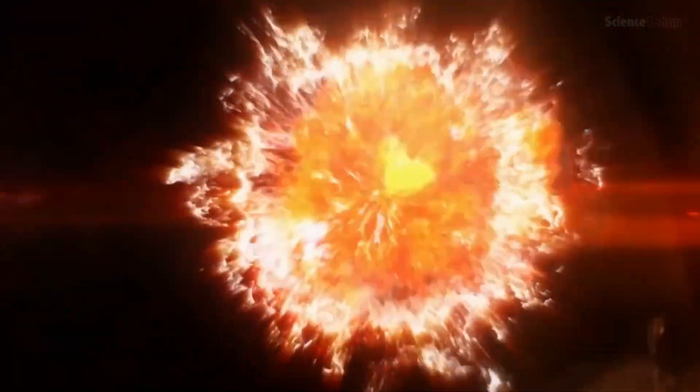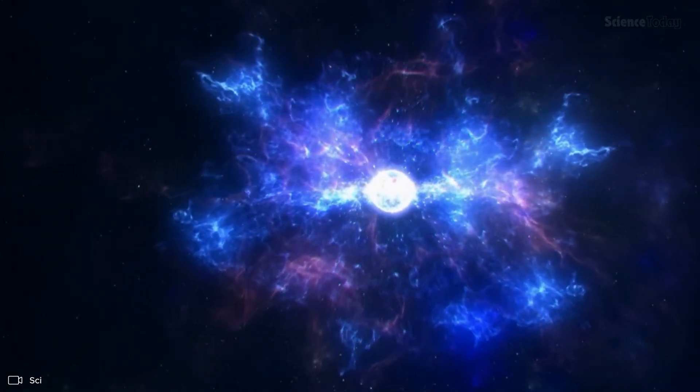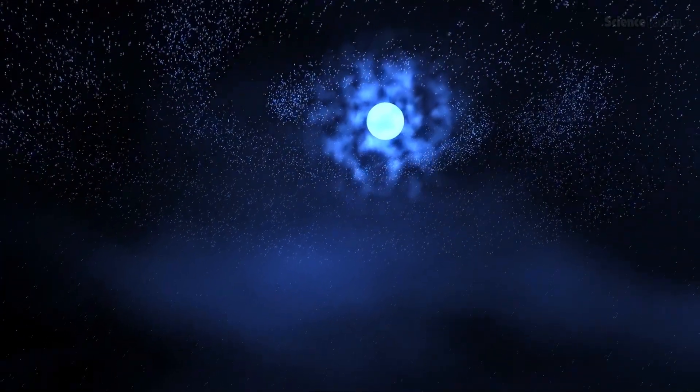What follows is one of the most violent events in the universe: a core-collapse supernova. The star's outer layers are blasted into space, but its core implodes. If the remaining core is less than three solar masses, the collapse halts, forming a neutron star.